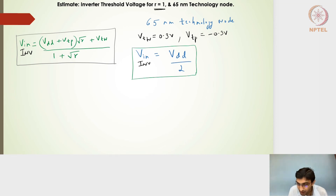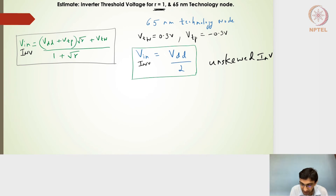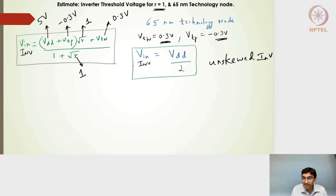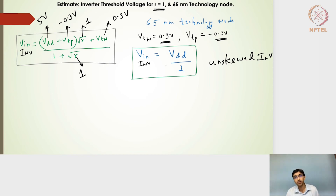For a 65 nanometer technology node with R = 1 (unskewed inverter), √R = 1 and the denominator becomes 2. VTN = 0.3 V and VTP = −0.3 V, so they cancel out in the numerator, leaving VDD/2. With VDD = 5 V, the threshold voltage is 2.5 volts — consistent with the graphical analysis, validating our expression.